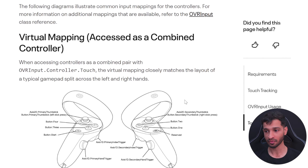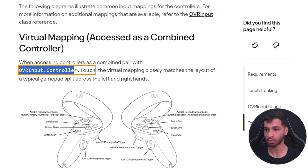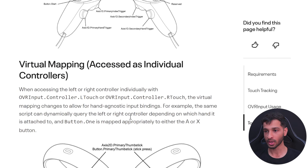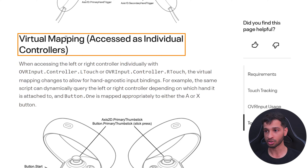Let's assume you want to access the trigger buttons on the left and right controller. You can do that by using OVRInput.Controller.Touch followed by Axis1D.primaryIndexTrigger to access the left hand trigger, and Axis1D.secondaryIndexTrigger to access the right controller.